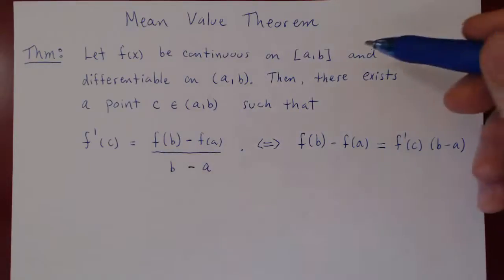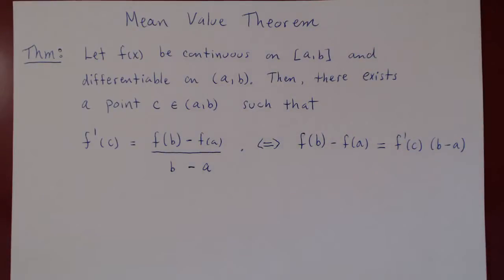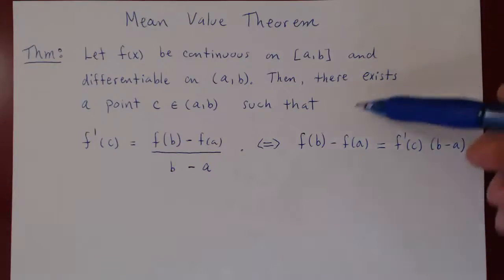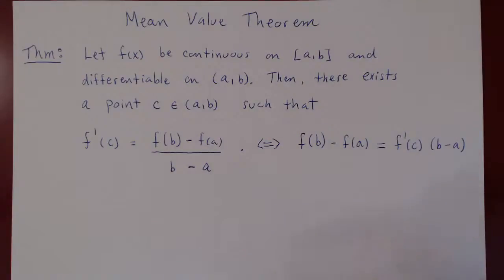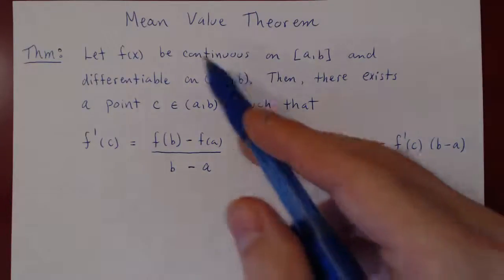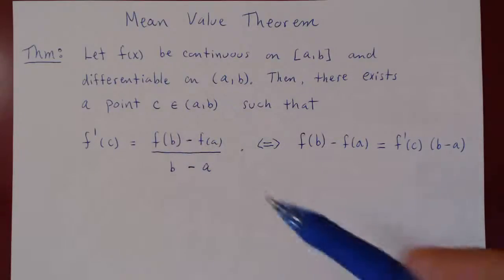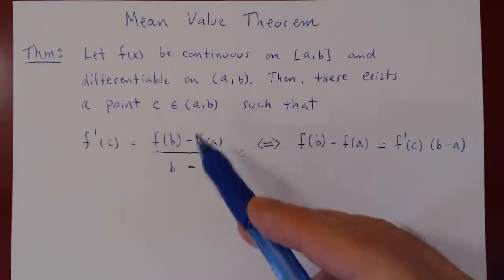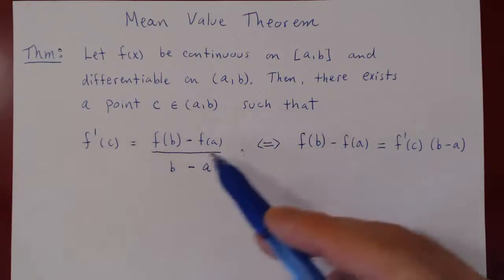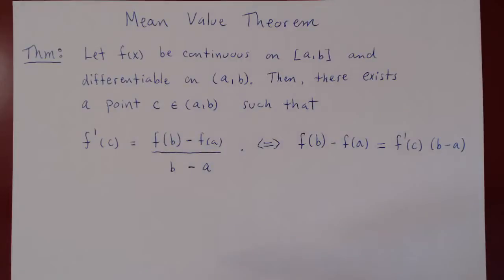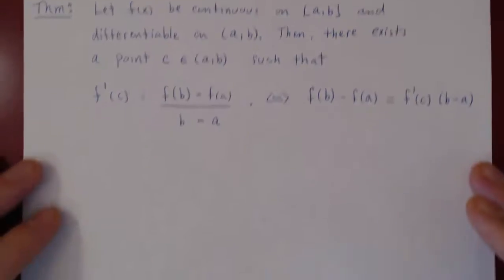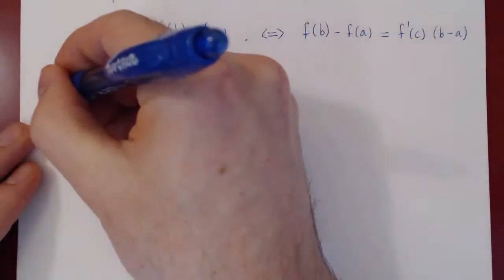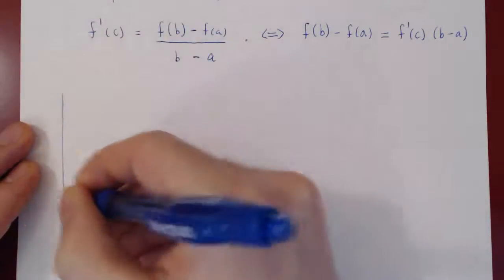The proof of this result will be surprisingly easy since we already have Rolle's Theorem — this will be a direct consequence of Rolle's Theorem. But before we prove the result, let's look at why this is very intuitive geometrically and see that there are possibly several points between a and b where the derivative equals the average slope. Imagine the graph looks something like this.